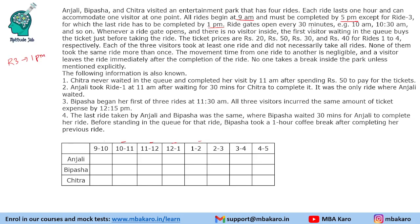Ride gates open every 30 minutes — that is 9am, 9.30am, 10am, 10.30am, 11am, 11.30 and so on. Whenever a ride gate opens and there is no visitor inside, the first visitor waiting in the queue buys the ticket just before taking the ride. So whoever is at the gate will be the first person to enter. The ticket prices are 20, 50, 30 and 40 rupees for rides 1 to 4 respectively.